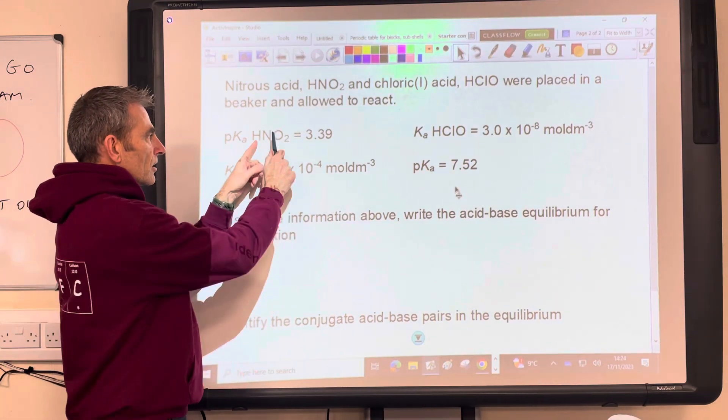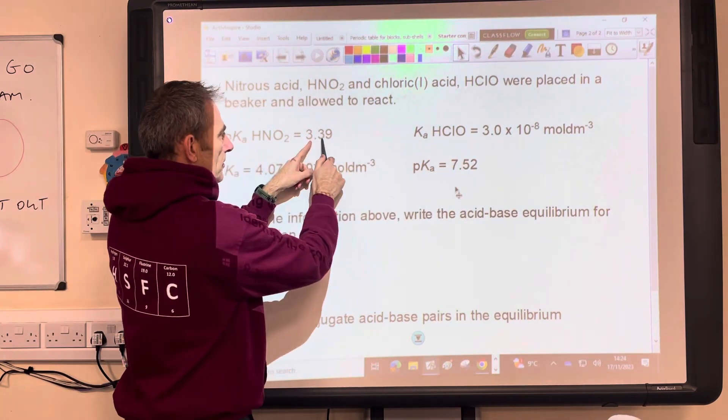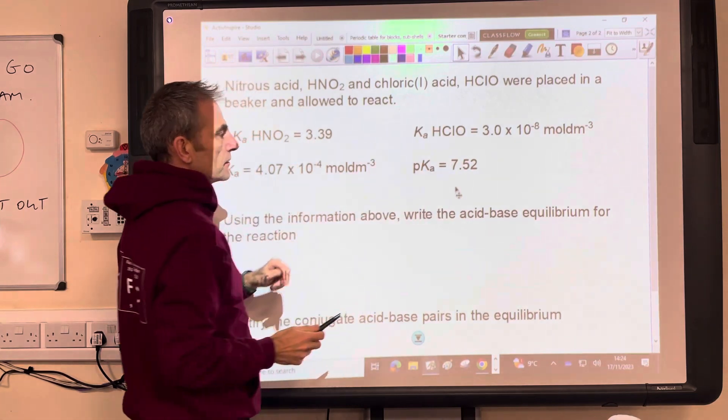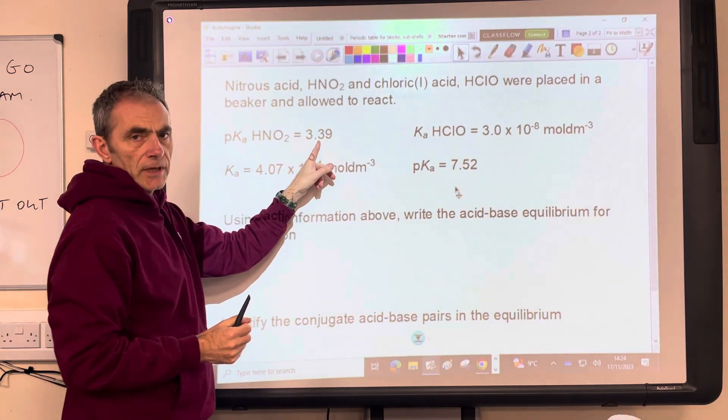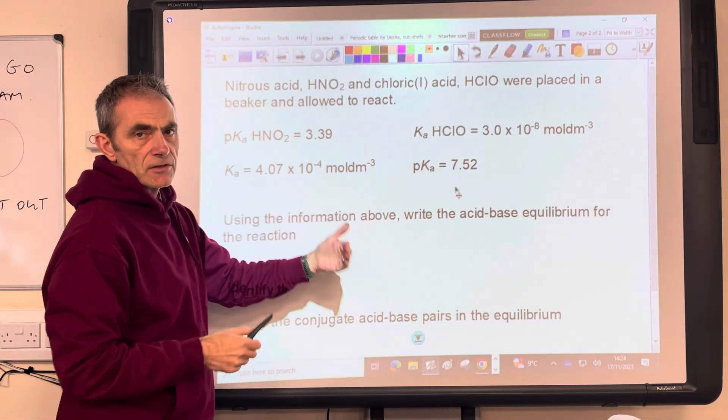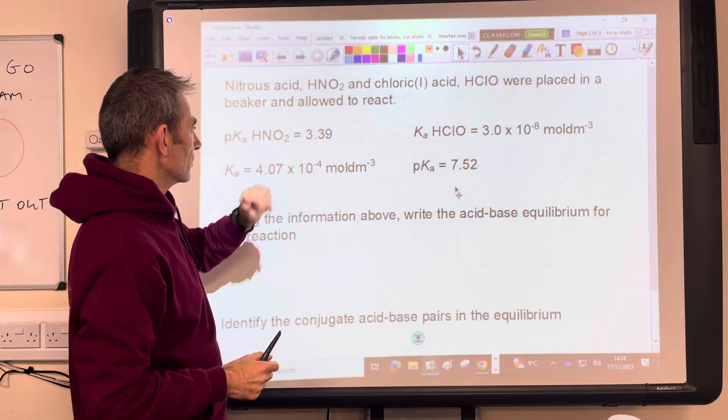So if we're looking at the pKa numbers, you've got 3.39 versus 7.52, the lower pKa number means a stronger acid. Okay, so we'll hold that there.